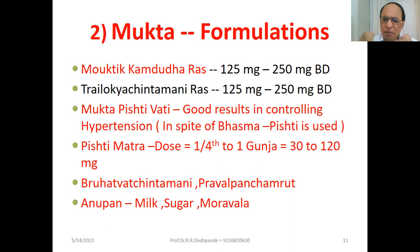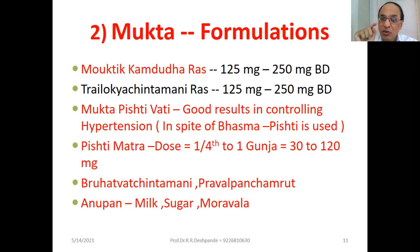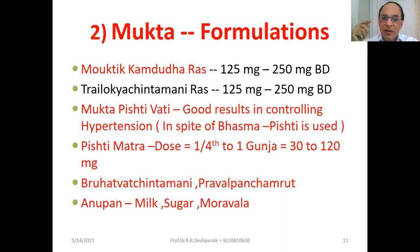Other products: Bruhat-Vat-Chintamani — the best anti-Vata drug, used for hemiplegia, Parkinson's, and Alzheimer's patients. Very costly, around 25-30 rupees per tablet. Sukshma-Bruhat-Vat-Chintamani is also available as a cheaper homeopathy-based alternative. Praval-Panchamrut is also an intestinal rejuvenator. Anupan for Mukta is milk, antacid, sugar, and morala from Amla.